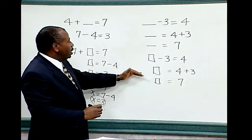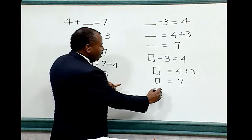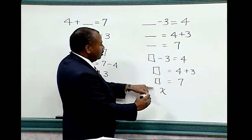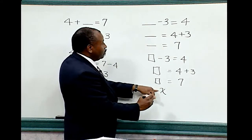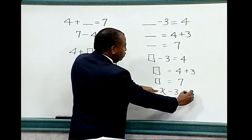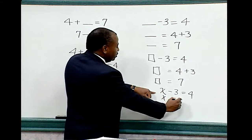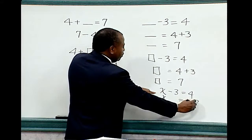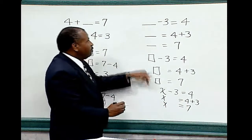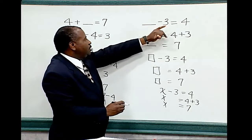And also in this same lesson, we can use x to represent the box and the blank. x, which represents the box, the blank, or an unknown number. x minus 3 equals 4. x equals 4 plus 3. x equals 7. Therefore, the solution to this particular problem is 7 minus 3 equals 4.